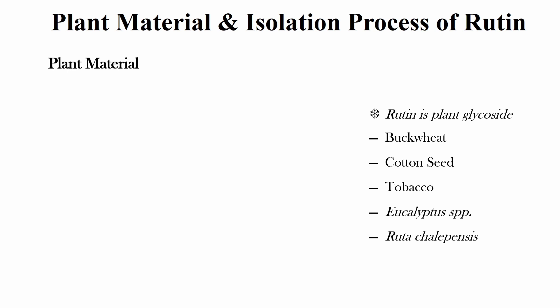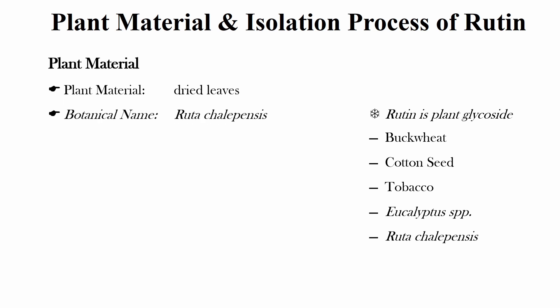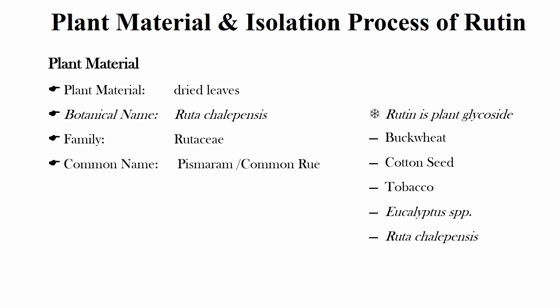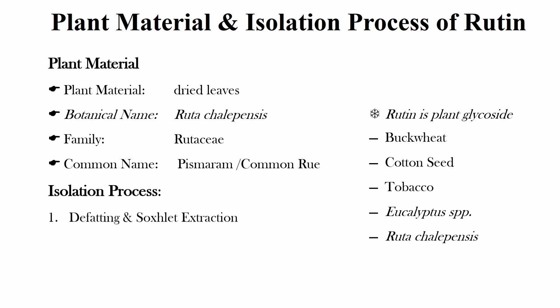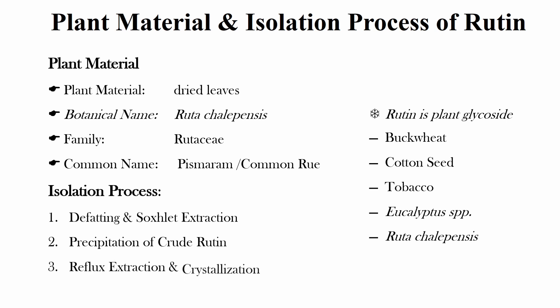Coming to the plant material — here we will isolate Rutin from dried leaves of Ruta chalepensis, belonging to the family Rutaceae. The common name of the plant is Common Rue. The isolation process includes defatting and Soxhlet extraction, followed by precipitation of crude Rutin, and then reflux extraction and crystallization.